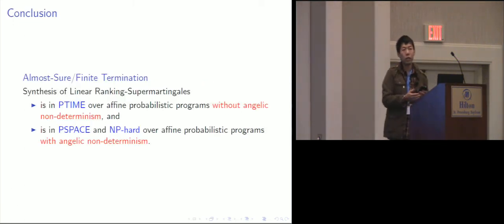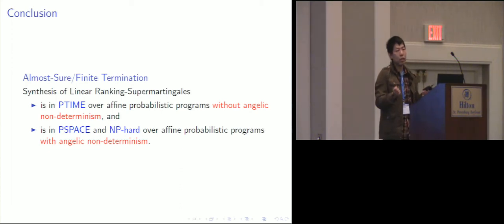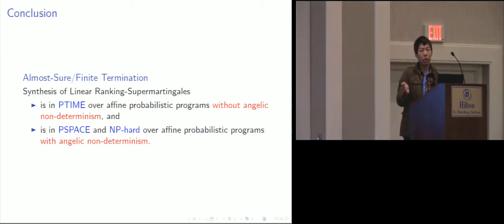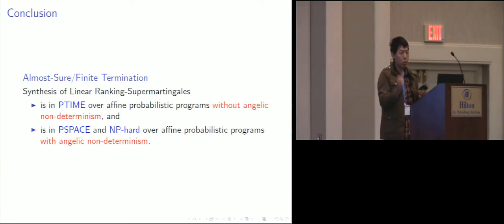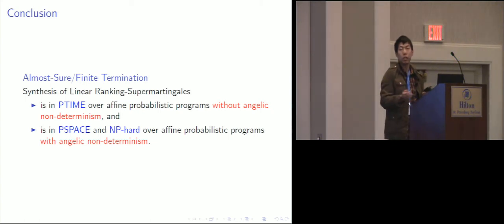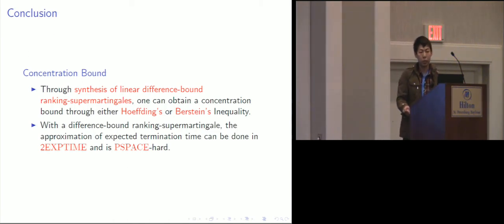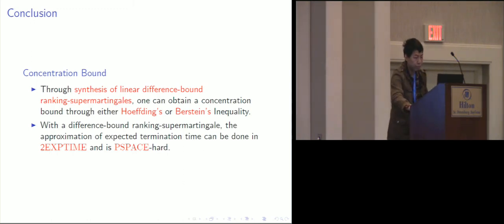In conclusion, we have performed almost sure and finite termination detection of affine probabilistic programs through synthesis of linear ranking supermartingales. We show that synthesizing linear ranking supermartingales is in polynomial time for programs without non-determinism, and lies between NP and PSPACE for programs with angelic non-determinism. We also show how to obtain a concentration bound through synthesis of linear ranking supermartingales, and present complexity analysis for obtaining such bounds.